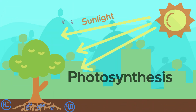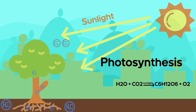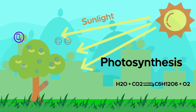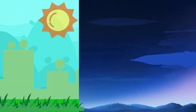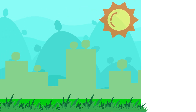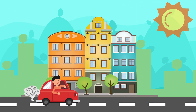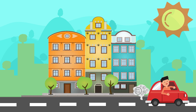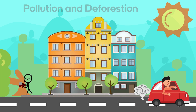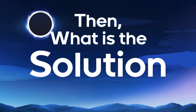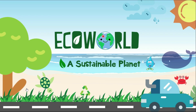All of us know the process of photosynthesis: carbon dioxide plus water in the presence of sunlight gives glucose and oxygen. But then what is the origin of the problem? These days we are going by cars which are emitting pollution, and we have various other problems like ozone layer depletion, deforestation, water scarcity, biodiversity loss, and many more. So the solution for all of these is Eco-World, a sustainable planet.